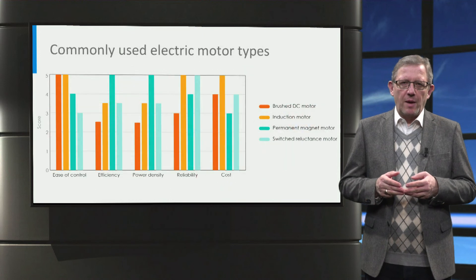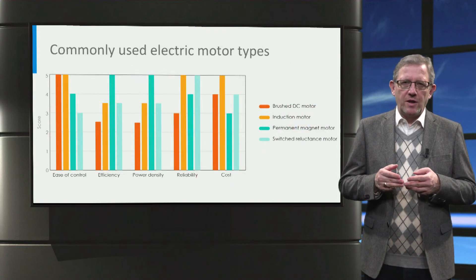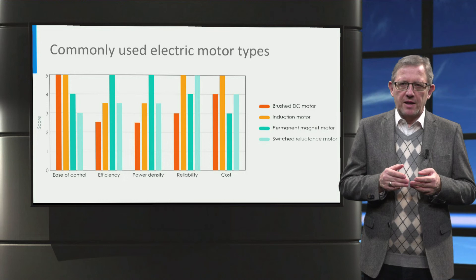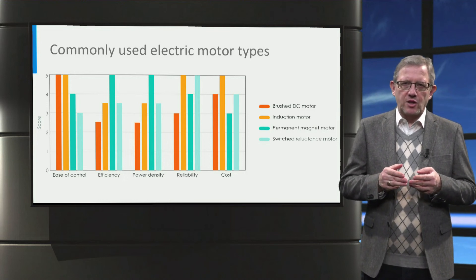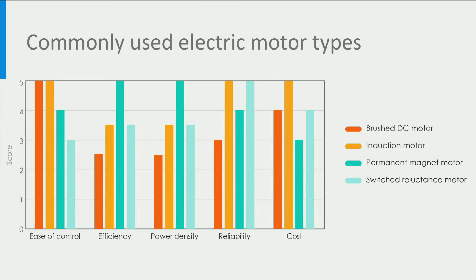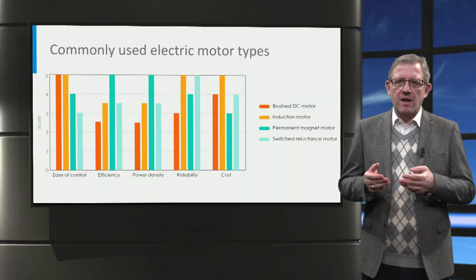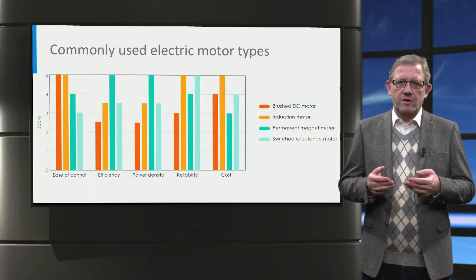Four types of electric machines have been used in both plug-in hybrid electric vehicles and battery electric vehicles to date: namely brushed DC motor, induction motor, permanent magnet motor and switched reluctance motor. It can generally be concluded that induction motors and permanent magnet motors are the most popular when considering various parameters such as control, efficiency, power density, reliability and cost.